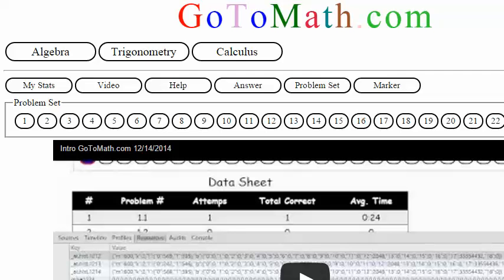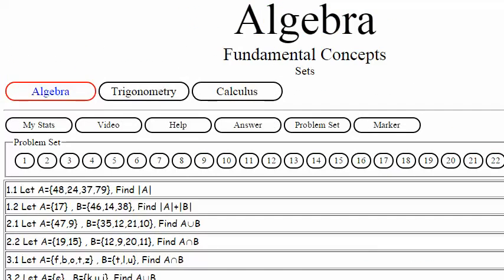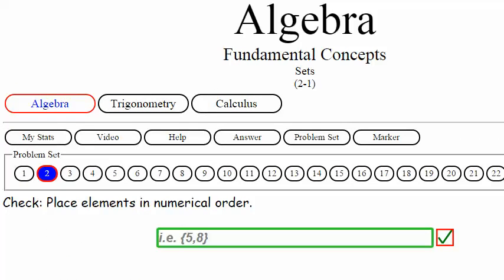We're here at gotomath.com working some algebra. Let's click on sets and go down to 2.1.